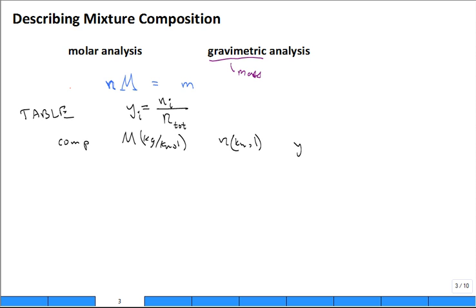Maybe over here mass in kilograms, and then the last one mass fraction. So on a molar basis you talk about the mole fraction Y. On a mass basis you talk about the mass fraction. The mass fraction for component i is the mass of that component divided by the total mass in the mixture.